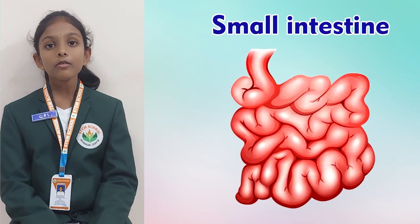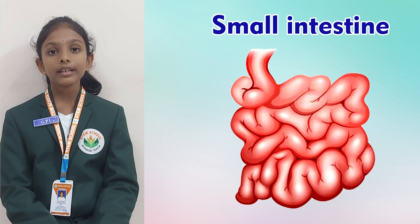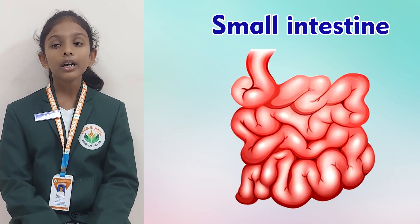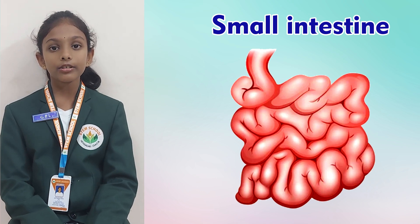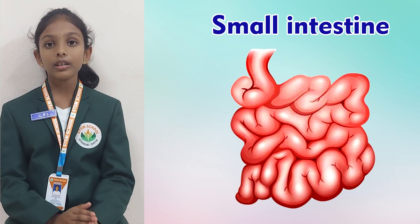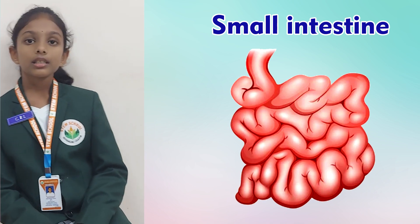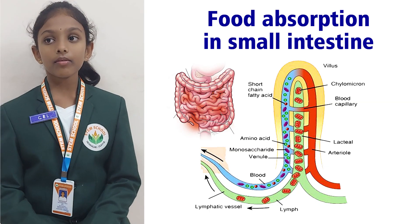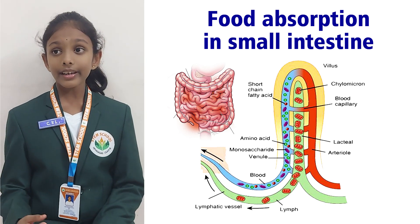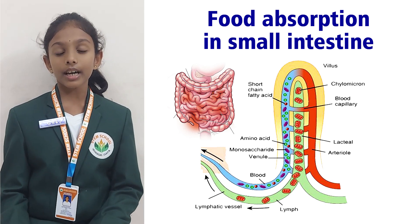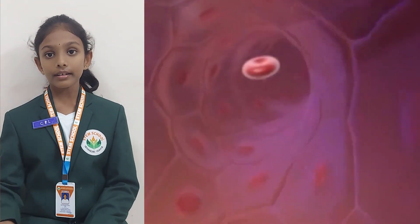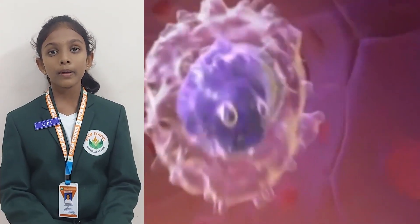Small intestine. Food moves from the stomach to the small intestine. The small intestine is a long, thin, coiled tube which releases digestive juices that break down the food into simpler form. The food is almost in liquid form in the small intestine. Then the digested food gets absorbed into the bloodstream and is supplied to the entire parts of the body through blood.